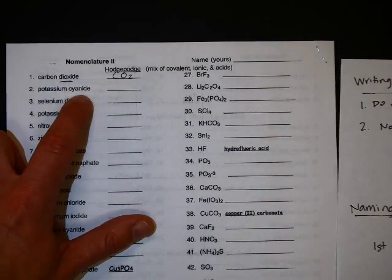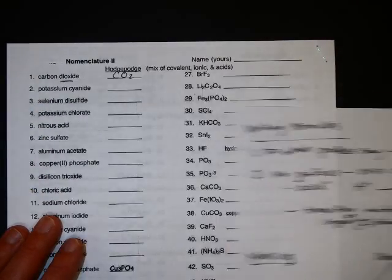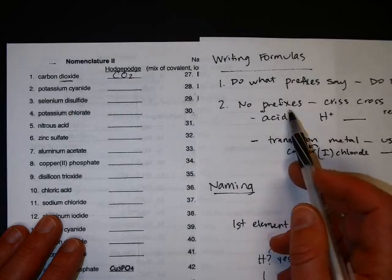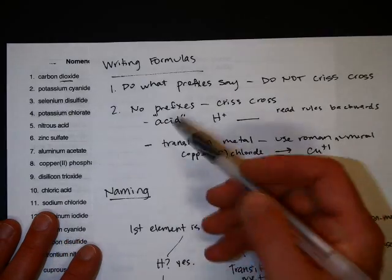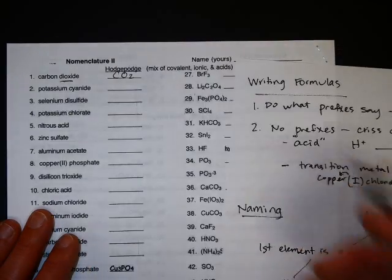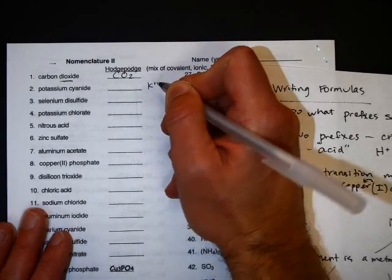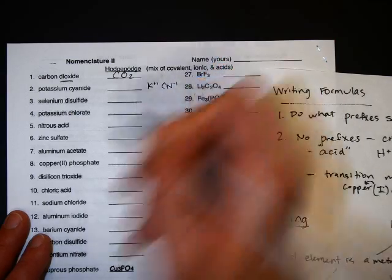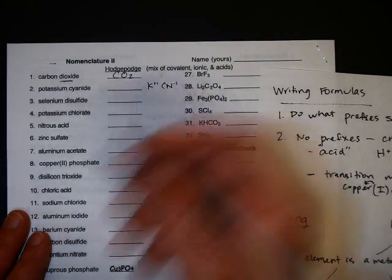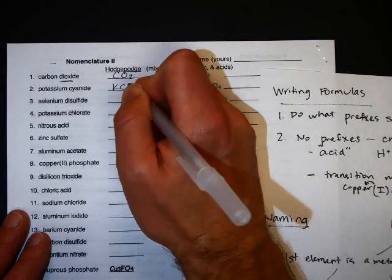Next one is potassium cyanide, so no prefixes there, so I should be crisscrossing. And it's not an acid, the word acid is not there. Potassium is not a transition metal, so none of these bottom rules apply. I'm just gonna crisscross kind of simply. Potassium is K plus one. Cyanide's on the back of your polyatomic ion list, and it's CN minus one. And you look them both up, crisscross, so in this case they both cancel each other out, so you get KCN.